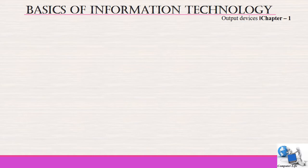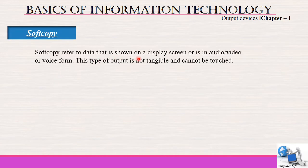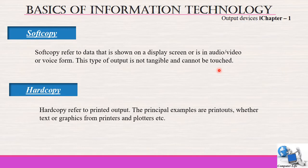Soft copy refers to data that is shown on a display screen or is in audio, video or voice form. This type of output is not tangible and cannot be touched. Hard copy refers to printed output that we can touch and use as per our need. Examples of hard copies are printouts — whether text or graphic — from printers and plotters.